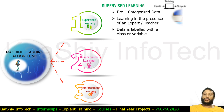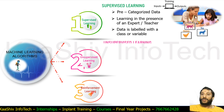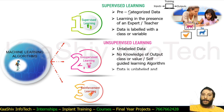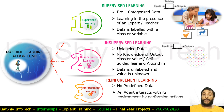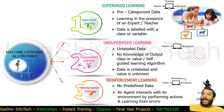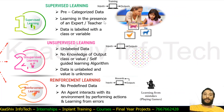The first topic is supervised learning. In supervised learning, you have a trainer and the data is pre-categorized. Learning happens in the presence of an expert. The data is labeled with a class and variable. You give input, training has already happened, and you try to get the output. That's how supervised learning works.